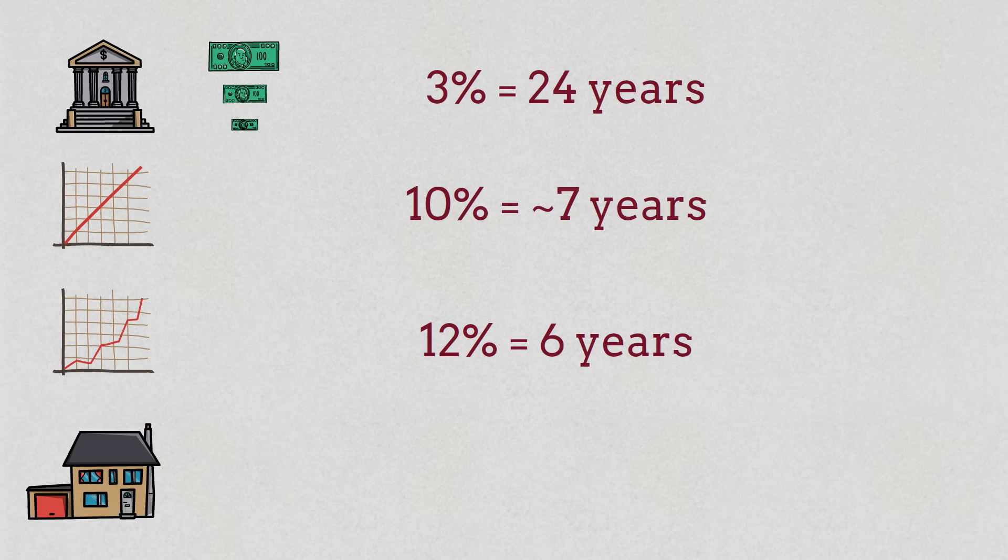Some people are drawn to real estate investing because it allows them to control a large asset with a relatively small down payment, essentially using the bank's money to amplify their potential gains. This kind of leverage can lead to impressive results, sometimes 15%, 20%, or even higher annual returns. Of course, higher returns come with higher risk and more work. And not every investor will achieve these numbers. To put it into perspective, an investment earning 15% annually can double in just under 5 years, about 4.8 years, while a 20% return cuts that time down to roughly 3.6 years.